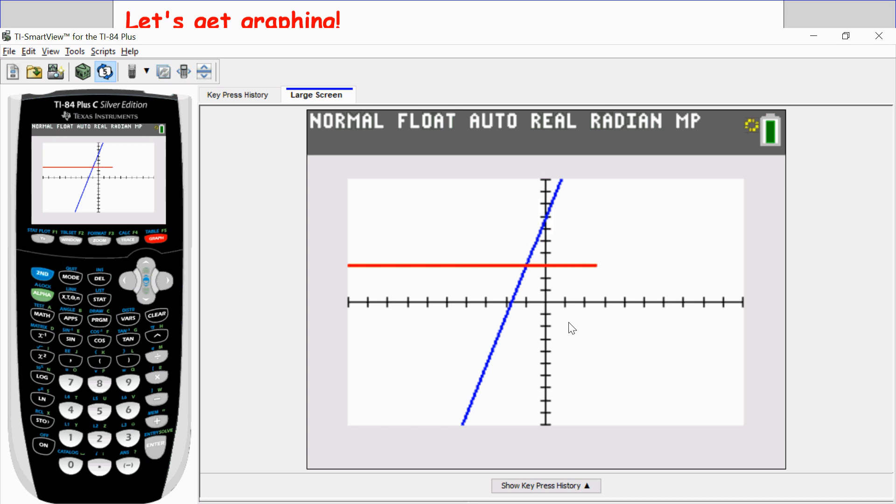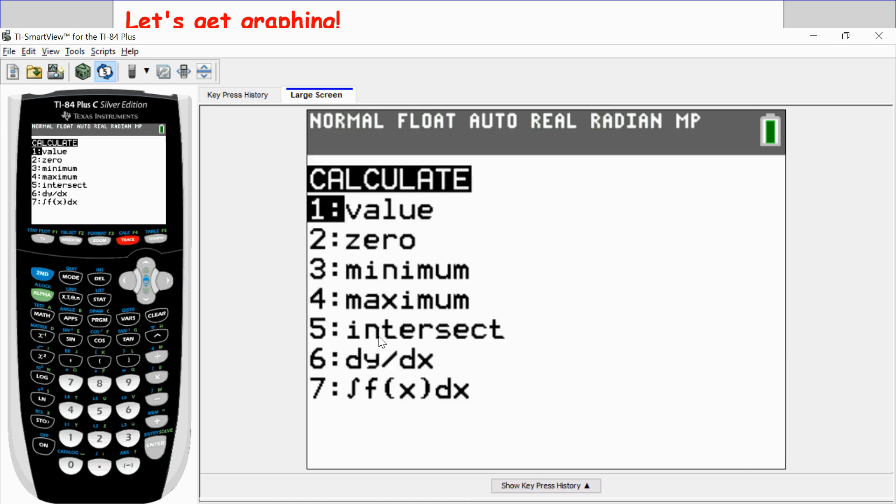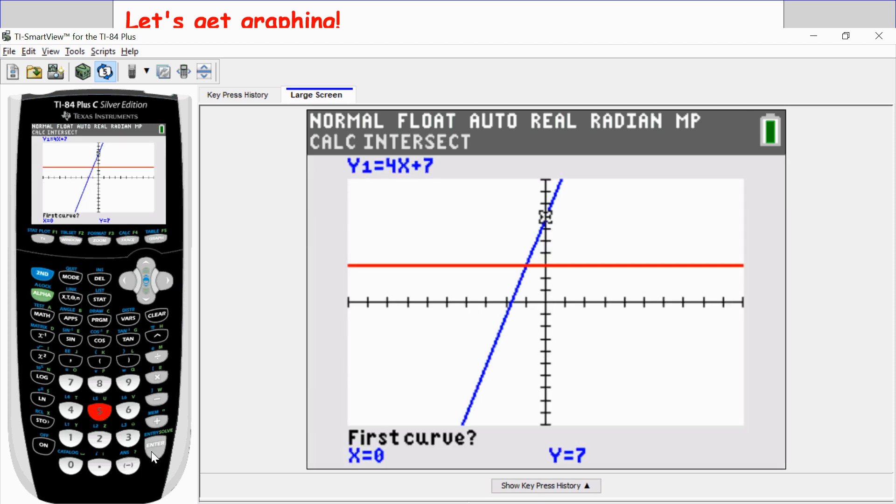So to find the value of x, I want to find where this graph intersects. So I go into second trace to get into my calculate menu. I choose option number 5, which is intersect. And then press enter, enter, and enter one more time.